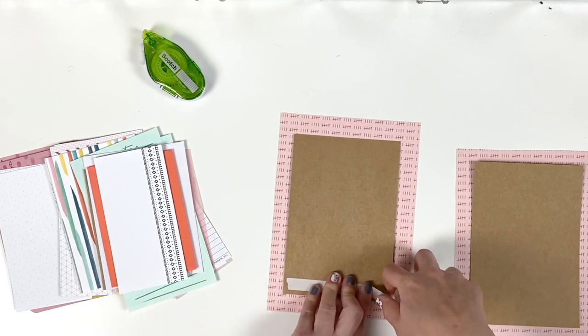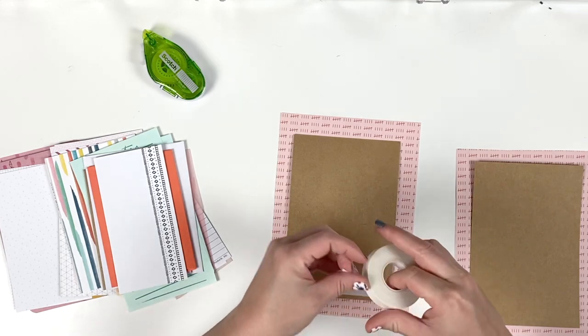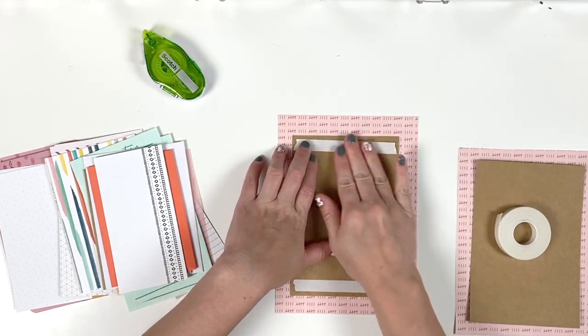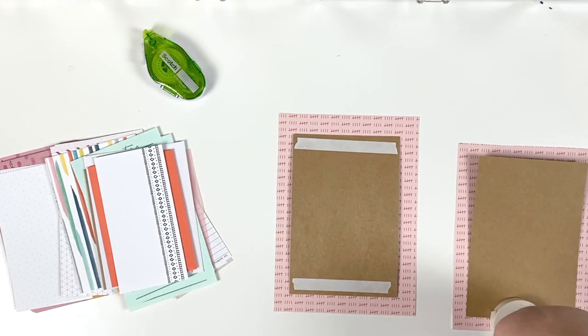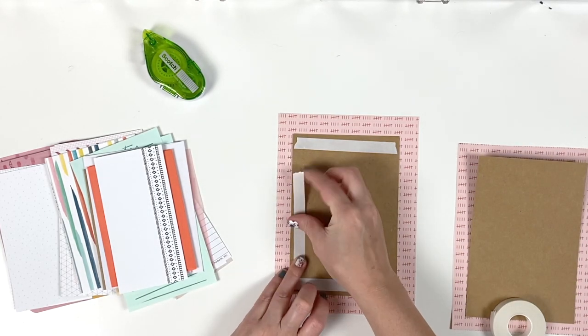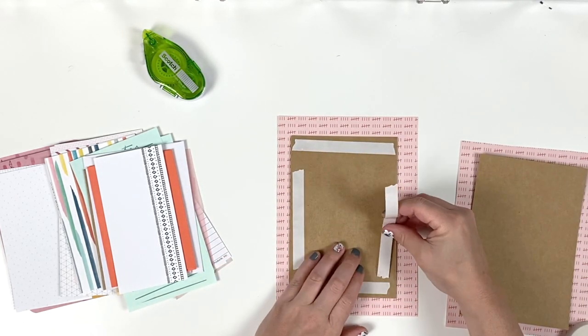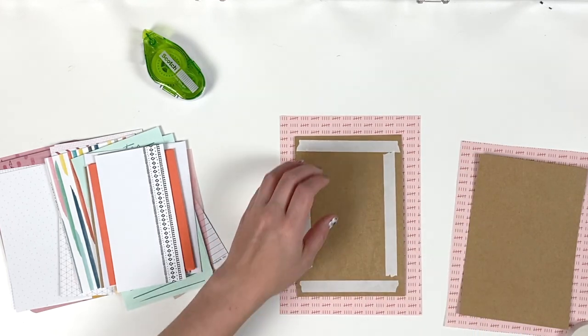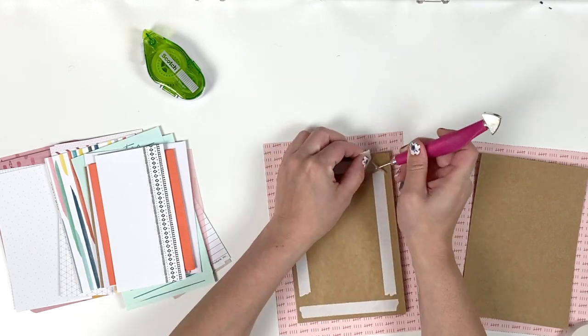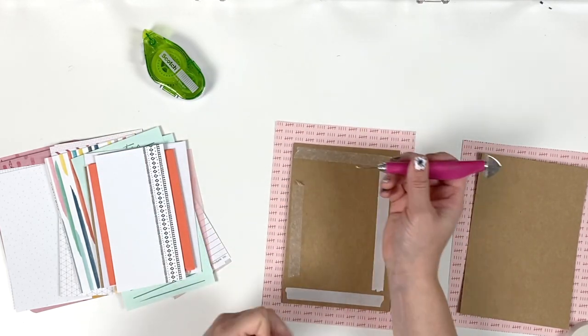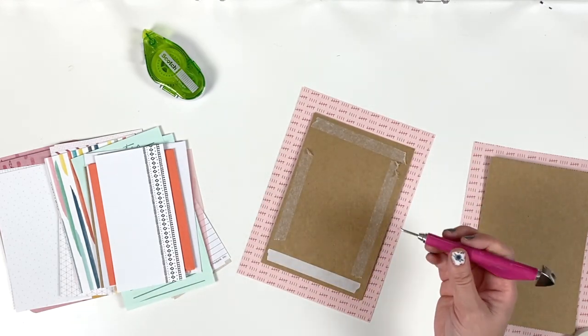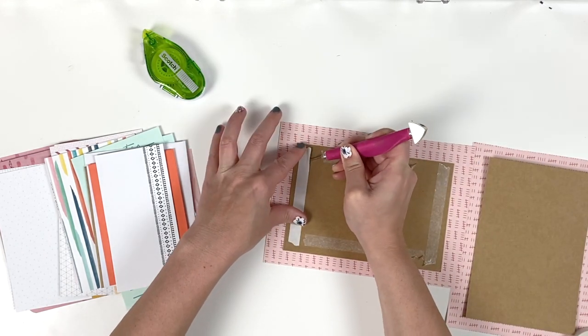So we're gonna start with the front covers. I have two chipboard pieces that measure about four and three-quarters by seven. The reason I chose that size is because my largest piece going inside this journal is slightly under that, so everything can fit nicely inside.